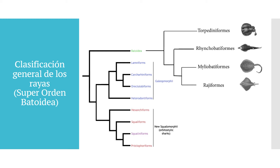Within the chondrichthyes, they belong to the subclass of the elasmobranchs. Both rays and sharks are elasmobranchs. Within the group of elasmobranchs, we saw a number of orders that we already covered with the sharks.